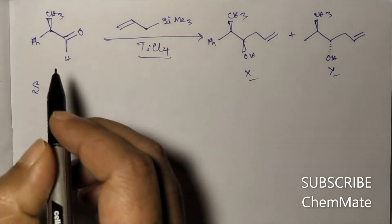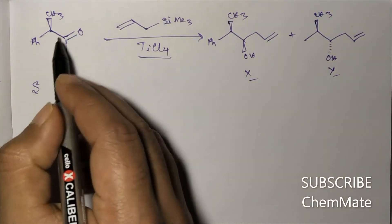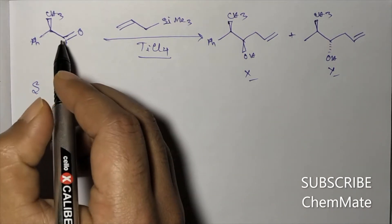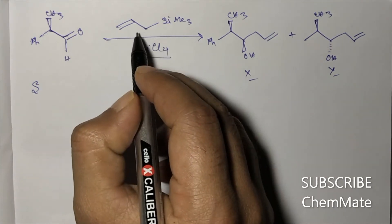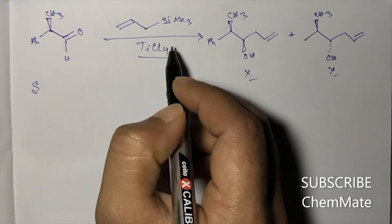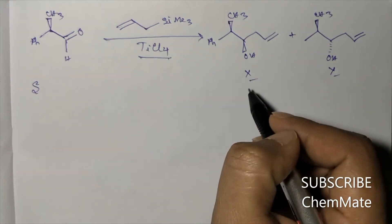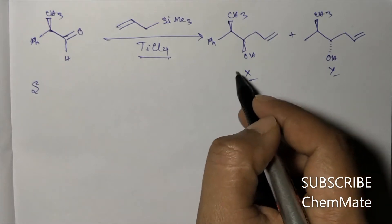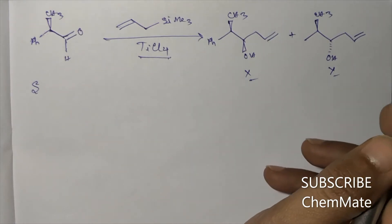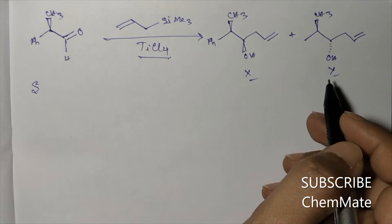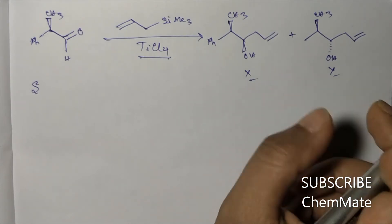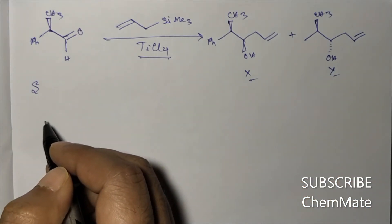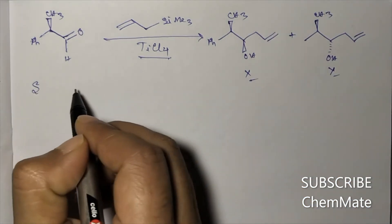Hi guys, here is a very interesting question. There is an aldehyde which has a chiral center at the alpha carbon, and it is treated with allyl silane in the presence of a Lewis acid. Products X and Y are formed, and we have to determine whether only X will be formed, only Y will be formed, or which one will be the major product if both are formed. This reaction is actually a named reaction called the Sakurai alkylation reaction.